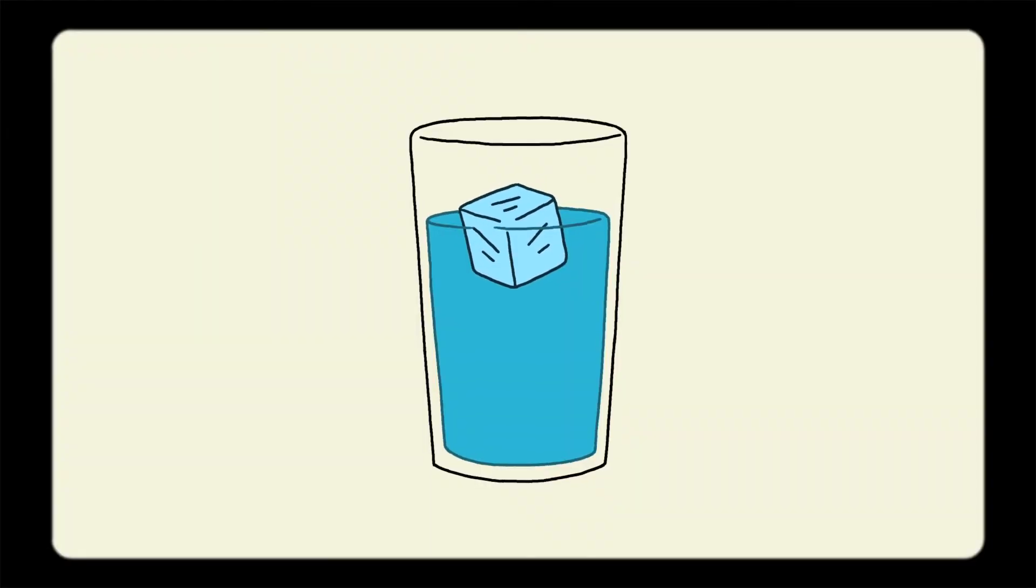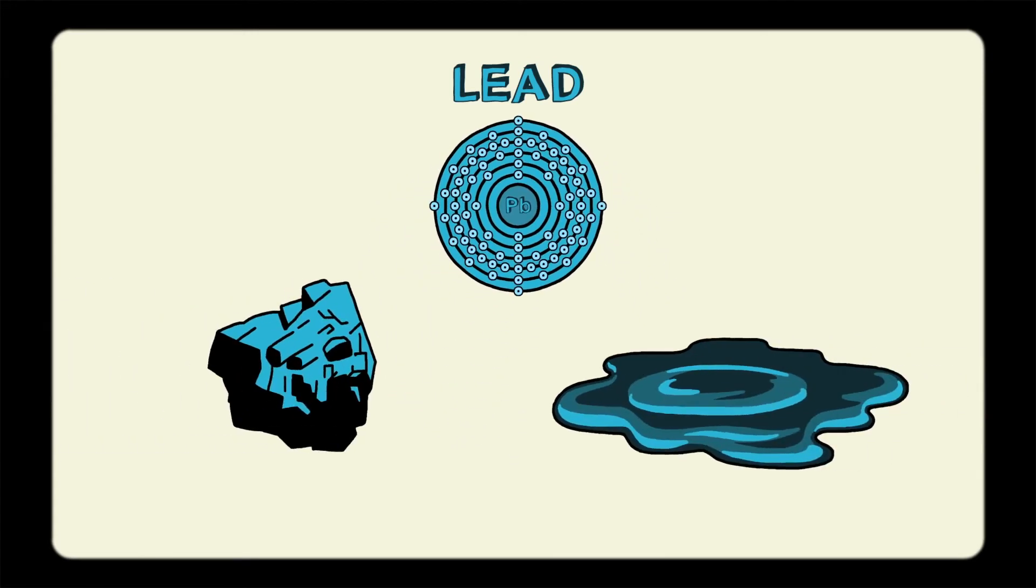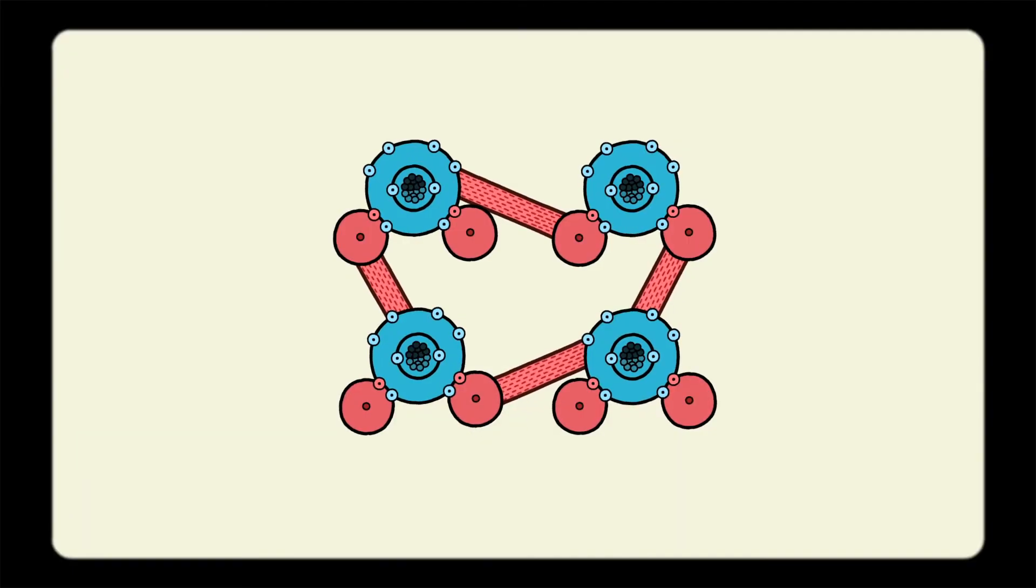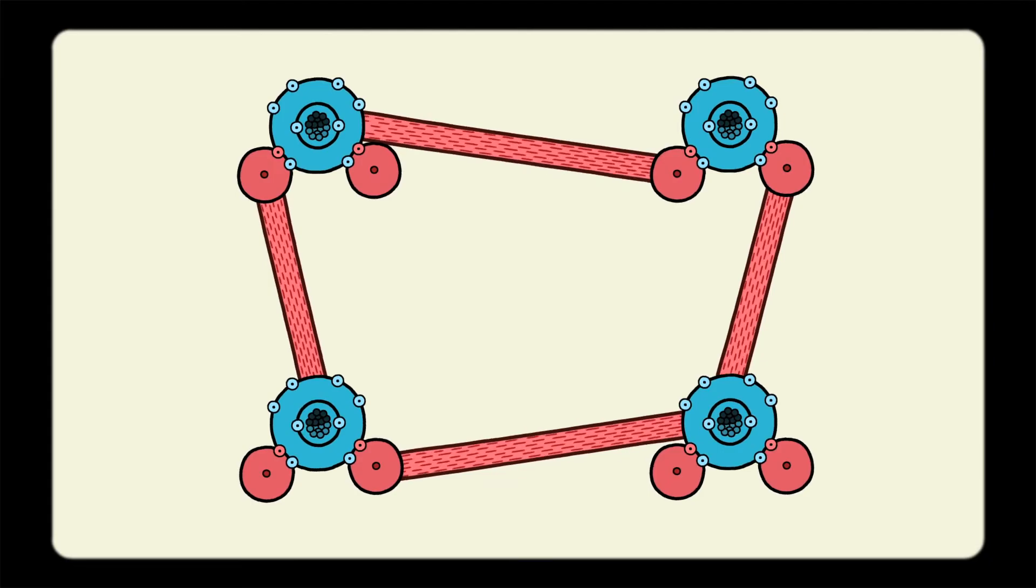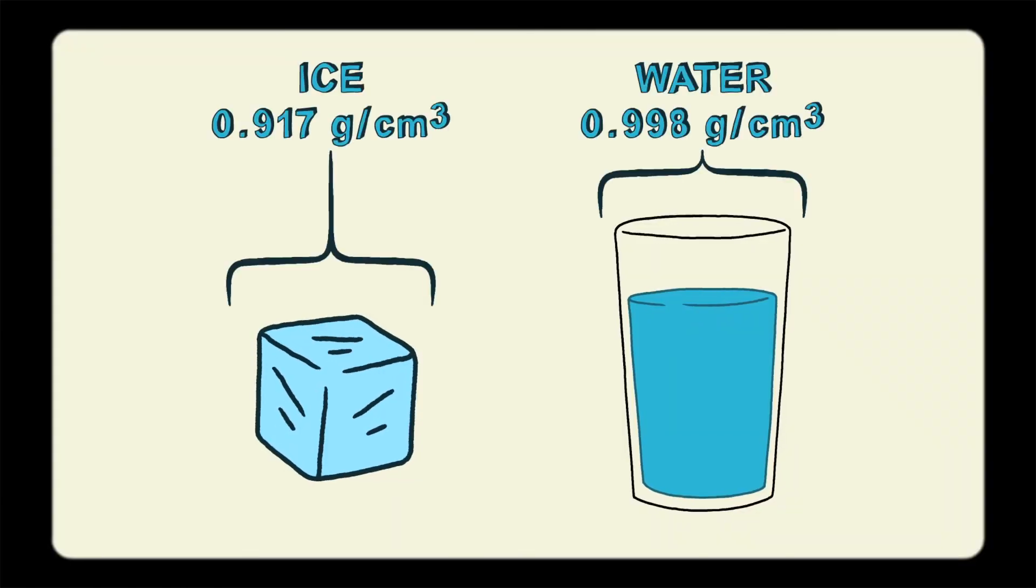Why does ice float on top of liquid water? For most other substances, the solid state is more dense than the liquid state. But, that is not the case for water. Hydrogen bonds keep water molecules farther apart in frozen water than in liquid water. The farther apart the molecules are, the less dense that solid is. So, ice is about 9% less dense than water, which means it floats on the top.